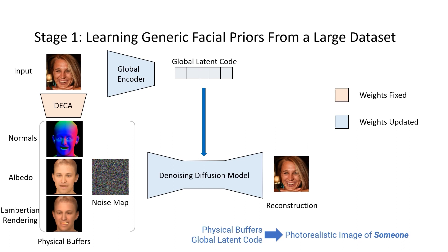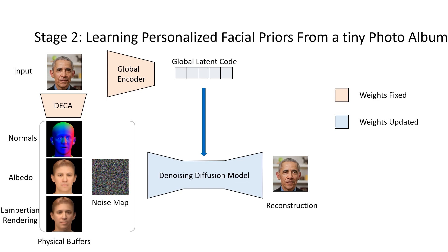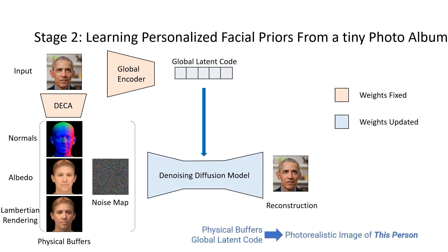Stage 1 training teaches the model to generate a nice photo of someone, but we need the model to learn about a specific person. Therefore, in the second stage, we would like to learn person-specific priors. We fix the global encoder and only fine-tune the denoising diffusion model this time. Instead of using a large dataset, we require only a tiny photo album of the same person at this stage. After this stage, the weights of the denoising diffusion model contain this person's personalized priors.